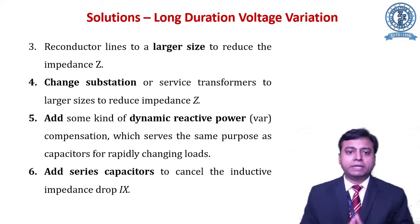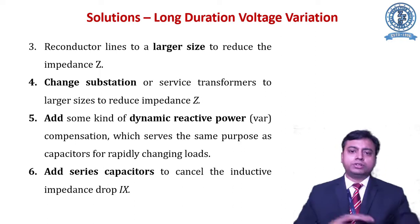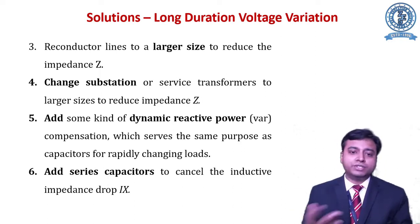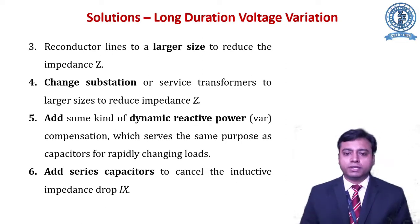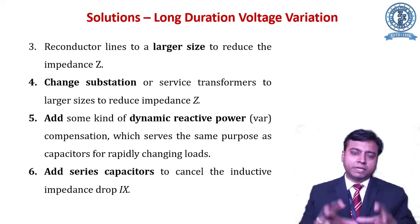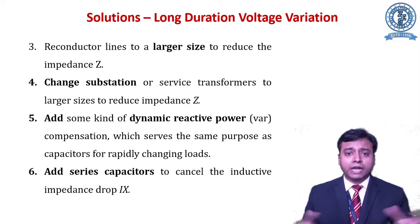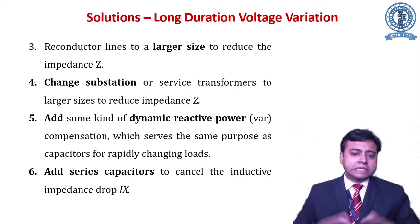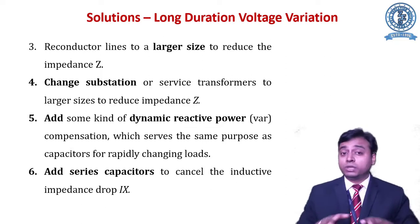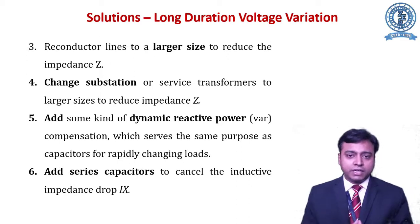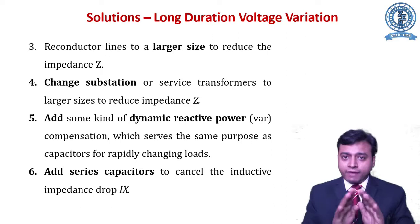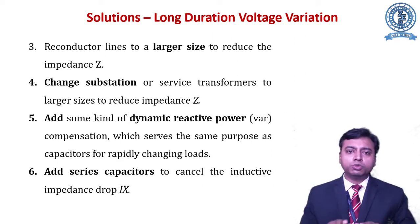You can also change the entire setup — replace the substation or transformer — so that the impedance parameter Z changes and the voltage variation is controlled. Dynamic reactive power can be added to the system through FACTS devices. Series impedance can also be added to cancel out inductive impedance IX, helping to maintain voltage balance. These solutions help maintain a smooth voltage profile and reduce long duration voltage variations.